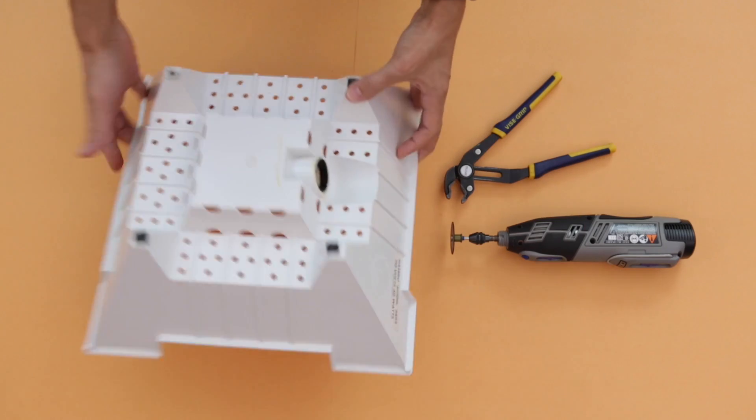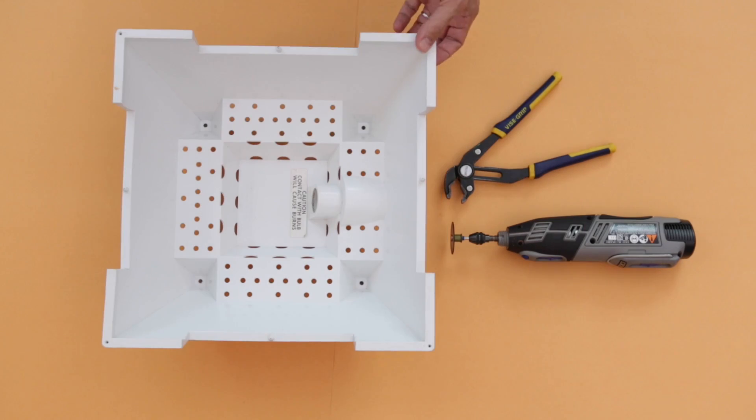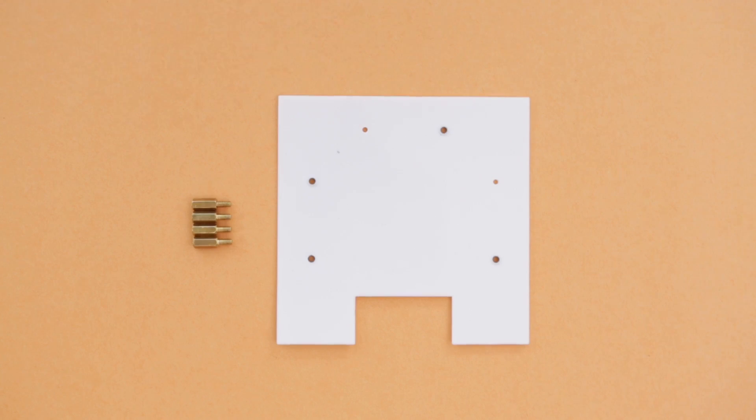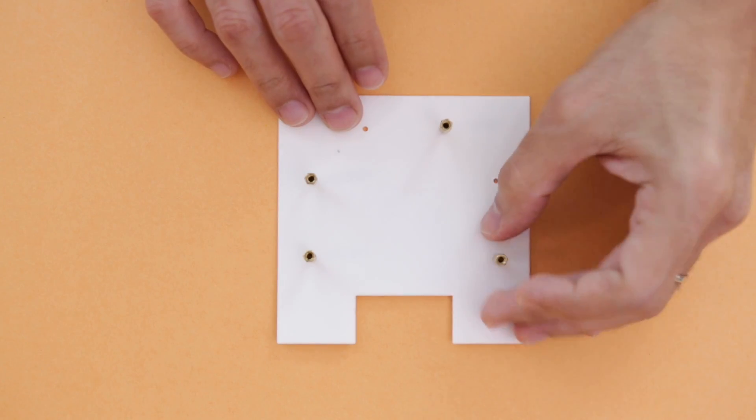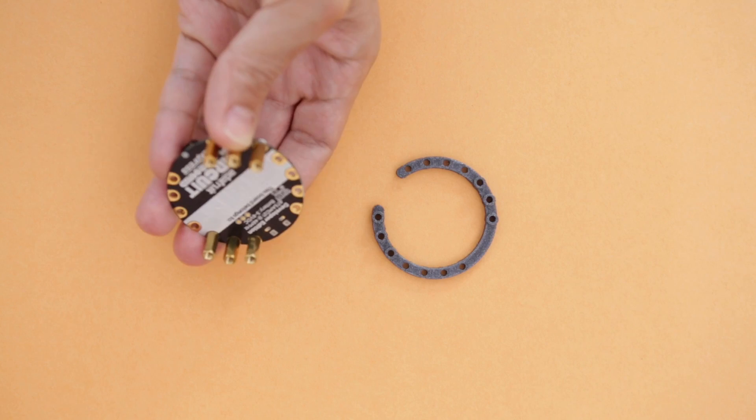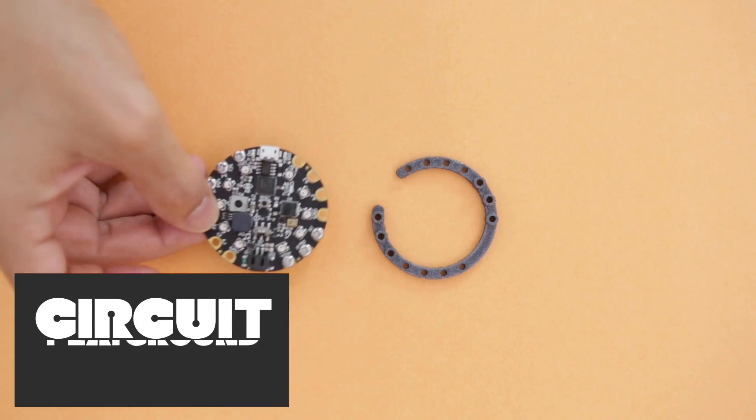We started by gutting the lightbulb using a rotary tool and pliers. Our 3D printed base secures the components using standoffs and hardware. A simple 3D printed bracket fits on top of the PCB for attachments.